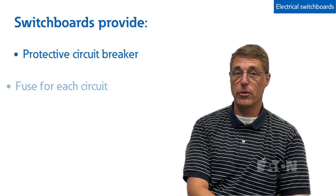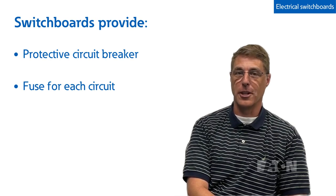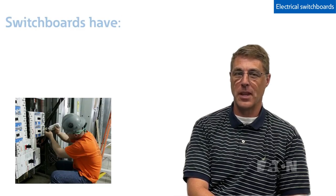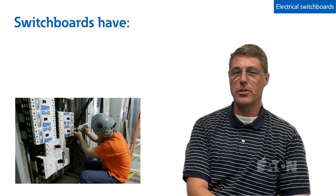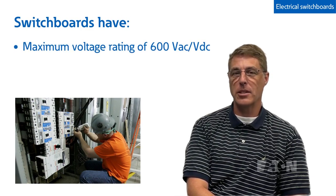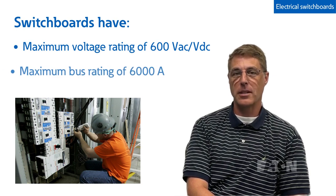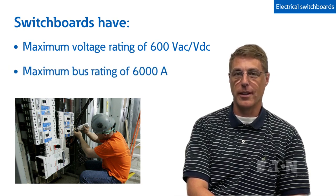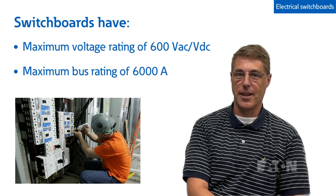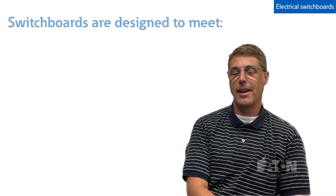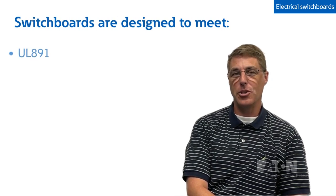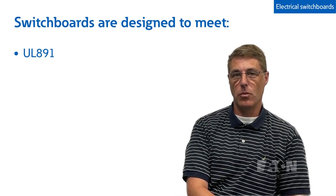Switchboards typically have a maximum voltage rating of 600 volts, either AC or DC, and a maximum bus rating of 6,000 amps, and are designed to meet UL 891 and NEMA standard PV2.